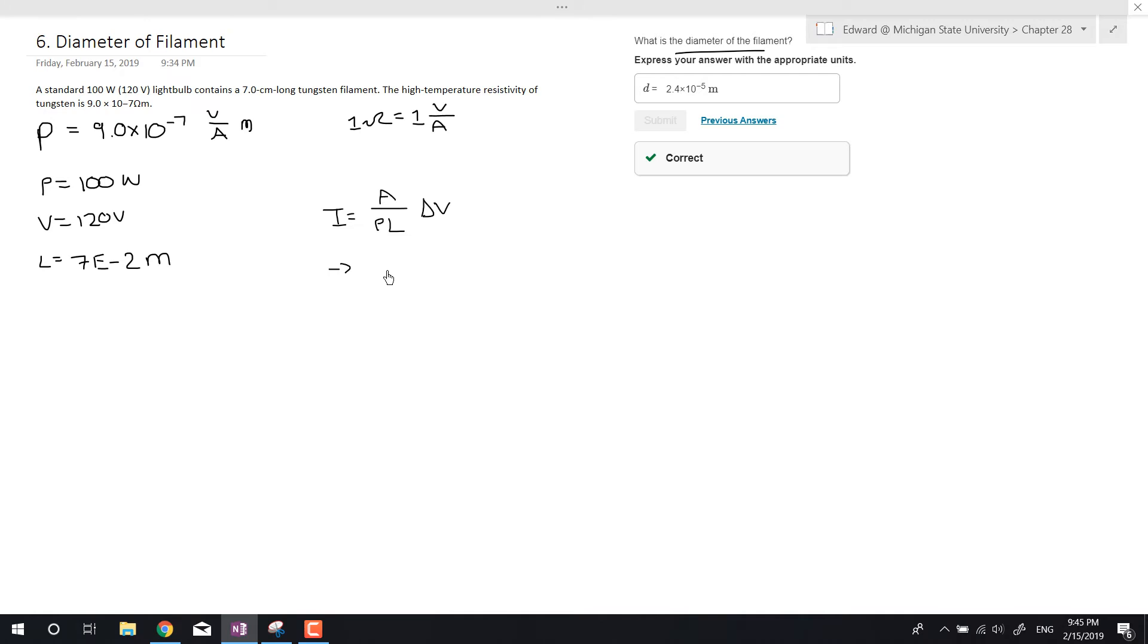So let's go ahead and rearrange for A. So we're going to get, what is A? Well, A, this is just going to be rho L times I, rho L I divided by change in V, okay? So, how do we get I? You know, we have rho, we have L, and this rho is not the power, okay? This is the resistivity, okay? Not the power.